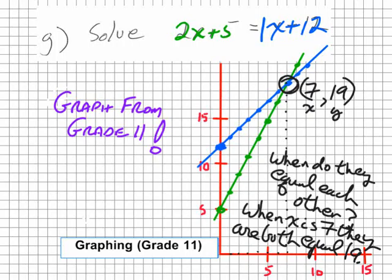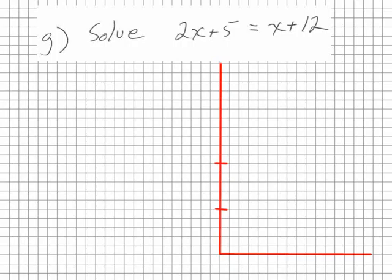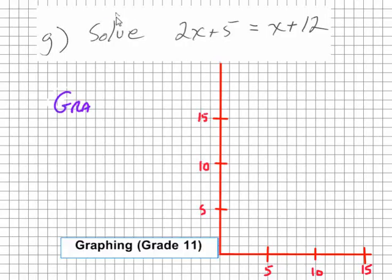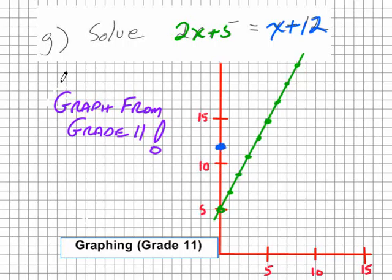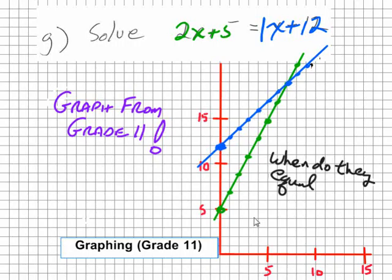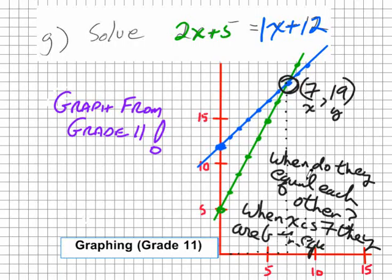And of course, this is why we learned how to graph things in grade 11. Check it out. If you don't like algebra, you can solve every problem by graphing it. In fact, you can solve more problems by graphing than you can with algebra. So let's graph it. If you remember how to graph 2x plus 5, here's what it looks like. This is grade 11 stuff. The question is, when does the green line equal the blue line? Well, it looks like it equals there. 1, 2, 3, 4, 5, 6, 7. That's 7, 19. So in other words, when the x is 7, the y is 19 for both lines. So if you don't like doing algebra, just go back to your grade 11 and figure out how to graph things because it works nicely too.